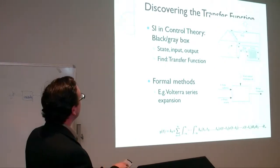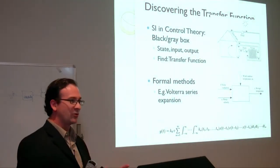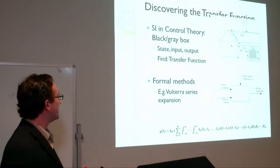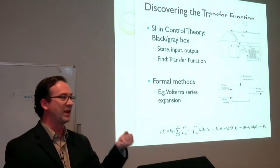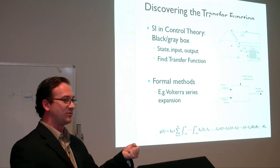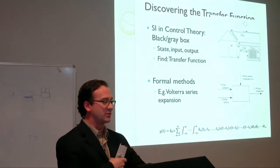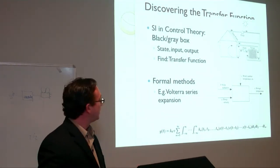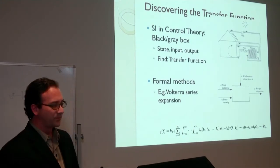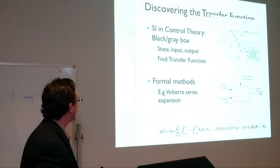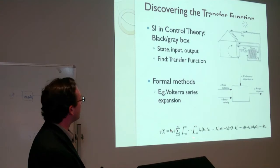Once you have your system identification problem — you know what system you're looking at, the effects you want to describe, and the signals of interest — you can treat it like a system identification problem in control theory. If all you can do is observe, it's called a black box. If you can also stimulate and observe, it's called a gray box. Having some notion of state, input, and output, you try to find the transfer function.